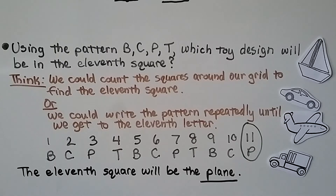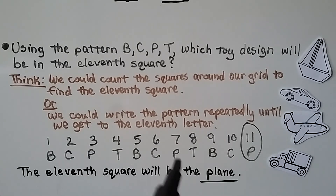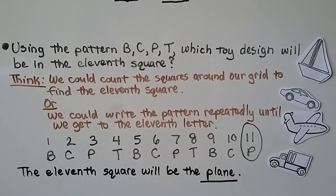Using the pattern B, C, P, T for boat, car, plane, train — which toy design will be in the 11th square? We can count around the grid to the 11th square, or write out B, C, P, T, B, C, P, T, B, C, P until we reach the 11th letter. The 11th square would be the plane.